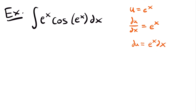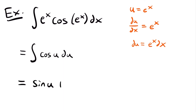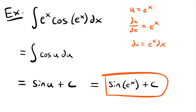Looking at our integral, we see e to the power of x and dx, so we can replace both with du. We rewrite the integral as the integral of cosine of u du. We know that the integral of cosine is sine, so this equals sine of u plus c. We then replace u with e to the power of x, giving our final answer: sine of e to the power of x plus c. That is the antiderivative and the solution to this integral.